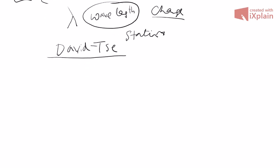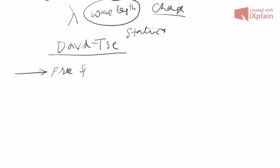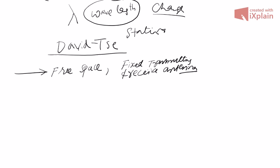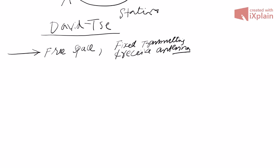We will first consider a case of free space — free space means you are communicating like a satellite link with nothing in between. You have a fixed transmitting antenna and a fixed receiving antenna. What we transmit via an antenna is a sinusoidal wave: at the source, we transmit cos(2πft), where f is the carrier frequency.